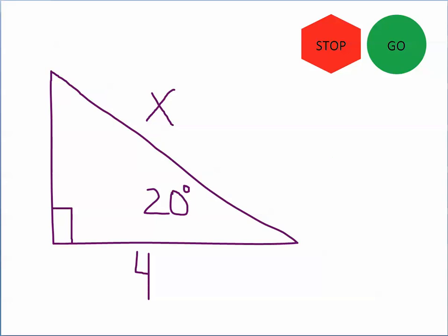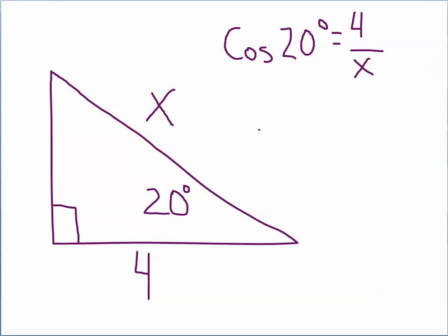Alright, try this one. Click on the stop sign. Okay, let's see how you did. We're dealing with an angle, and we're also dealing with the adjacent side. This side is next to the angle, and this is always the hypotenuse. So we're dealing with the cosine function.